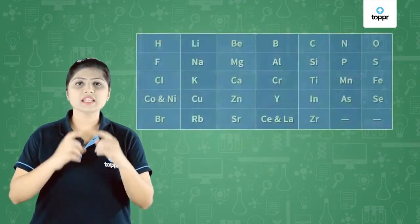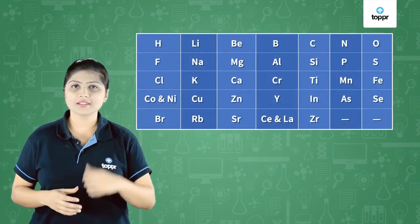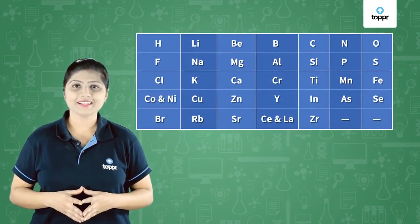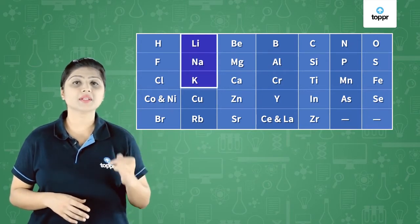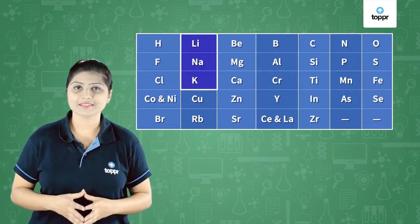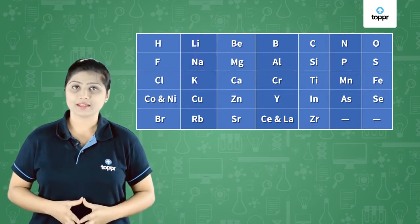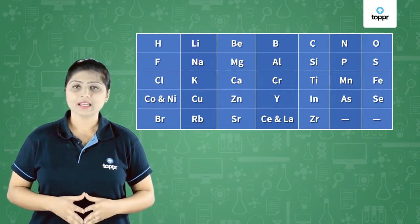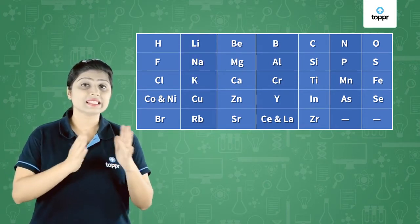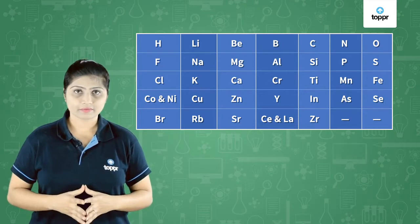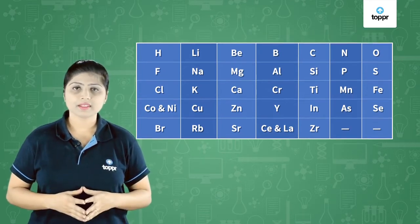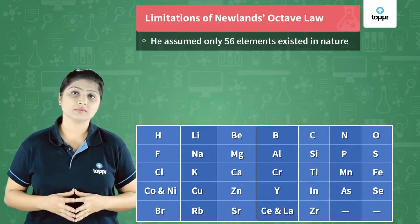Do you see a Döbereiner's triad here in the table? Yes — lithium, sodium, and potassium form a Döbereiner's triad. This law was found in 1866 — Newland's Octave Law. But there were certain limitations of this law.